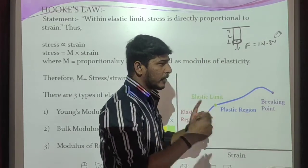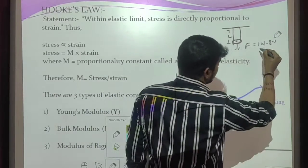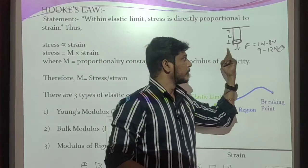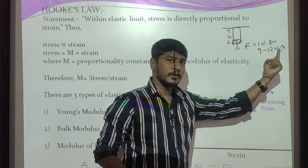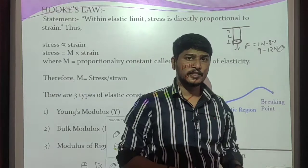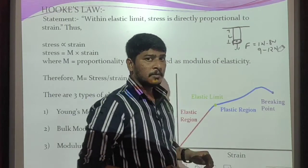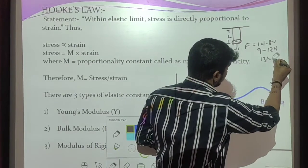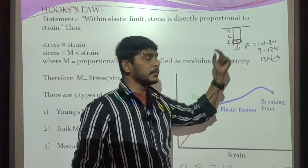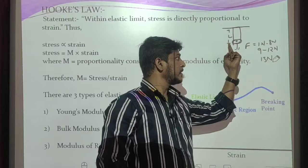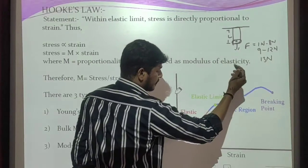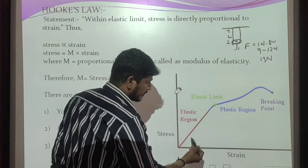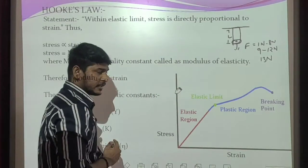Then we increased the deforming force from 9 Newton to 12 Newton. When we remove this force, the body does not regain its original size and shape — this is due to the property of plasticity. If we increase force to 30 Newton, the object breaks into two parts; that is the breaking point. When we plot a graph of stress versus strain, we get a characteristic curve.